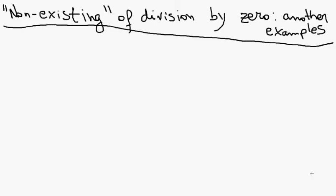A very simple example is speed, which we see in physics. Speed is a distance traveled divided by the time that the object needed to travel that distance. So speed can be expressed, for example, in meters per second. What happens here is that we can't have a division by zero — the change in time needed to travel a distance needs to be different from zero.